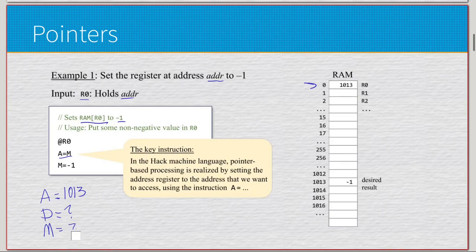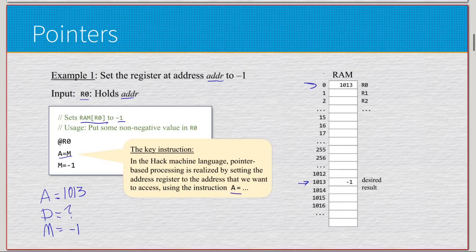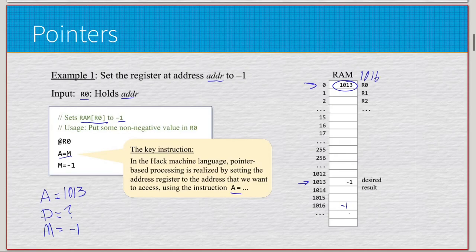We're going to set it to negative one. Now all of a sudden RAM address 1013 is negative one. This key instruction in the Hack machine language — pointer-based processing is realized by setting the address register to the address we want to access. The instruction is A equals M, because it's whatever we want from our current address. So if I wanted to adjust address 1016, I'd change 1013 to 1016 and write negative one there — just change what's in R0 to whatever memory address we want, and dynamically we can adjust the pointer to point to something new in our stack of addresses.